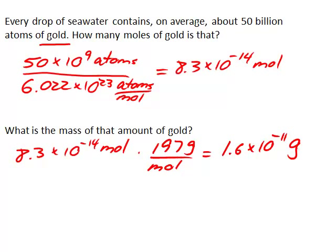So, 50 billion atoms of gold has a mass of 1.6 times 10 to the negative 11 grams. Not a lot.